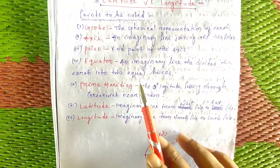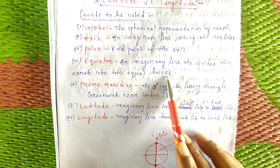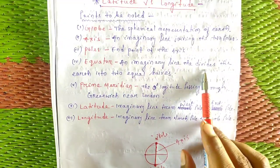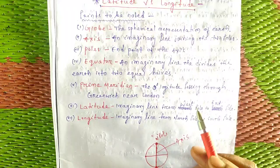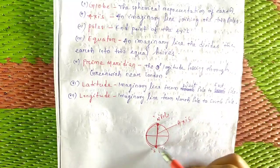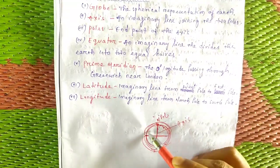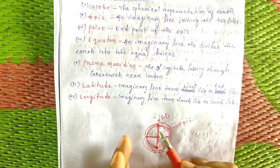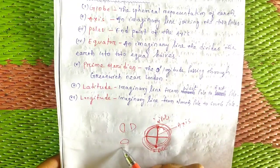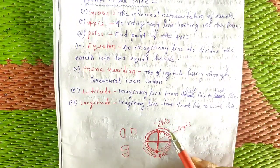Next is the equator — an imaginary line that divides the earth into two equal halves. We divide the earth by this imaginary line, which is called the equator.